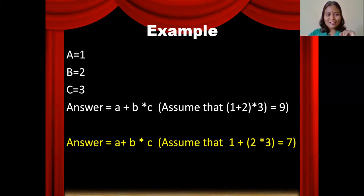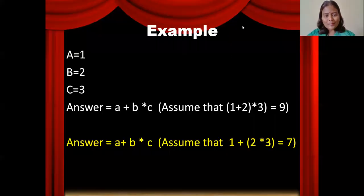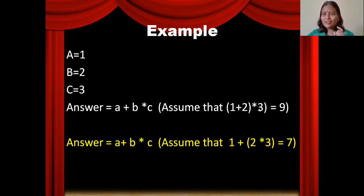Just imagine — substitute A by 1, B by 2, C by 3. The first method: assume you calculate the plus operation first. 1 plus 2 equals 3, then 3 multiplied by 3 equals 9. If you evaluate the expression in this fashion, the obtained result would be 9.